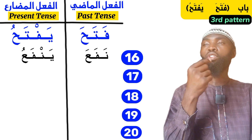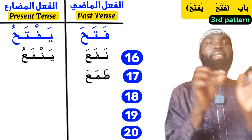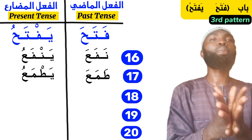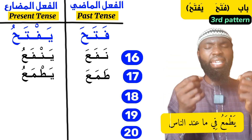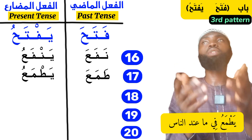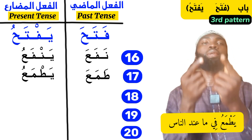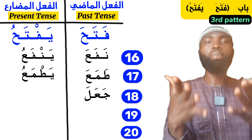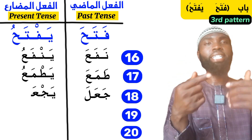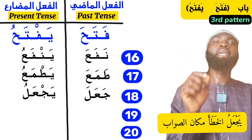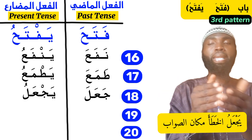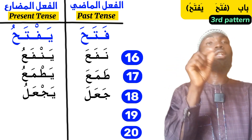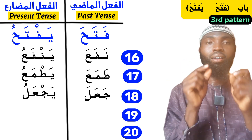Another word is toma'a — 'he desired, to desire something.' The present tense is yatma'u. An example: yatma'u fima 'indannas — 'He is desiring that which is with people.' Another word is ja'ala — 'he made, to make or do something.' The present tense is yaj'alu. An example: yaj'alu al-khata'a makana as-sawab — 'He is putting the wrong in the place of what is right.' Ja'ala yaj'alu falls under the category of fataha yaftahu.